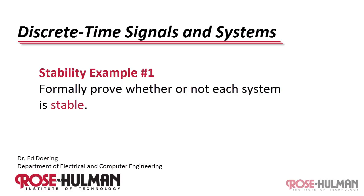This is stability example number one. Formally prove whether or not each system is stable.